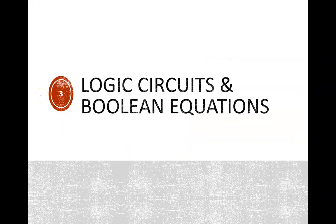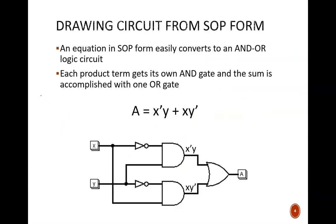The nice thing about standard forms of equations is that they are standard, which means there are consistent ways of using them. When given a standard sum of products equation, we can easily convert it to a circuit. Each product term is achieved with its own AND gate. Then, the outputs of those AND gates are all fed into a single OR gate. In this example, there are two product terms, and so there are two AND gates.